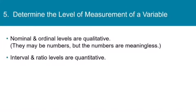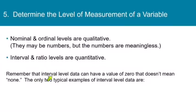So how does this compare to what we learned about qualitative and quantitative variables? Well, nominal and ordinal levels are qualitative. They might be numbers, but the numbers are meaningless, meaning that all they do is label. So that's going to be qualitative. And then interval and ratio levels are quantitative. They are numbers, and the numbers have meaning.